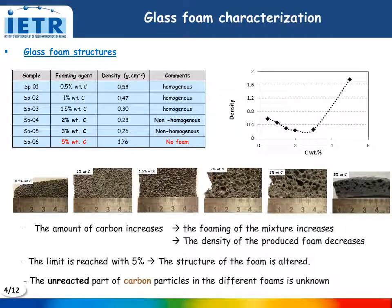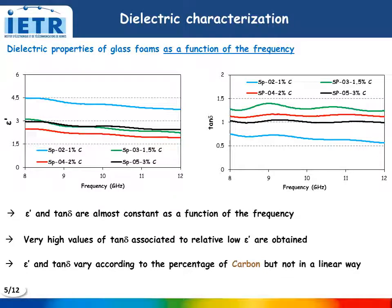Different amounts of carbon are used, between 0.5 and 5%. This curve and these photos show that when the amount of carbon increases, the foaming of the mixture increases and the density of the foam decreases. The limit is reached with 5% of carbon, for which the structure of the foam is altered.